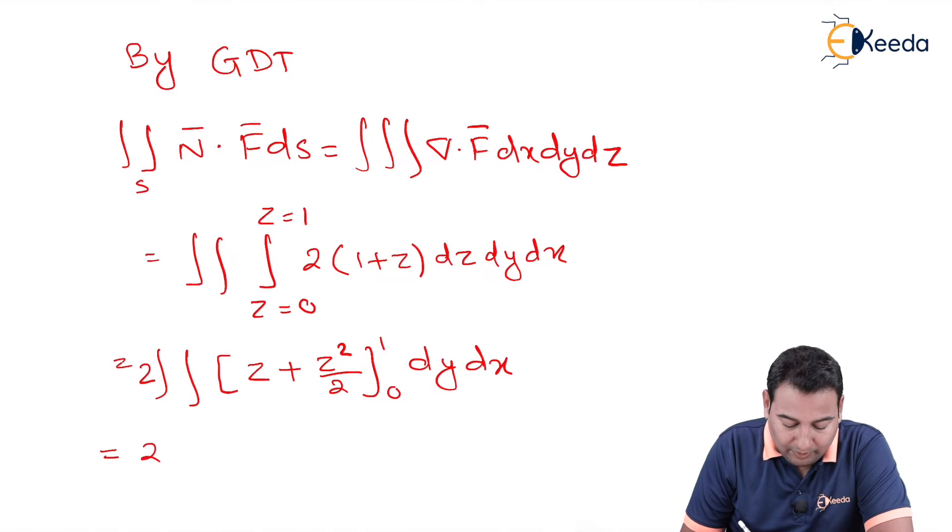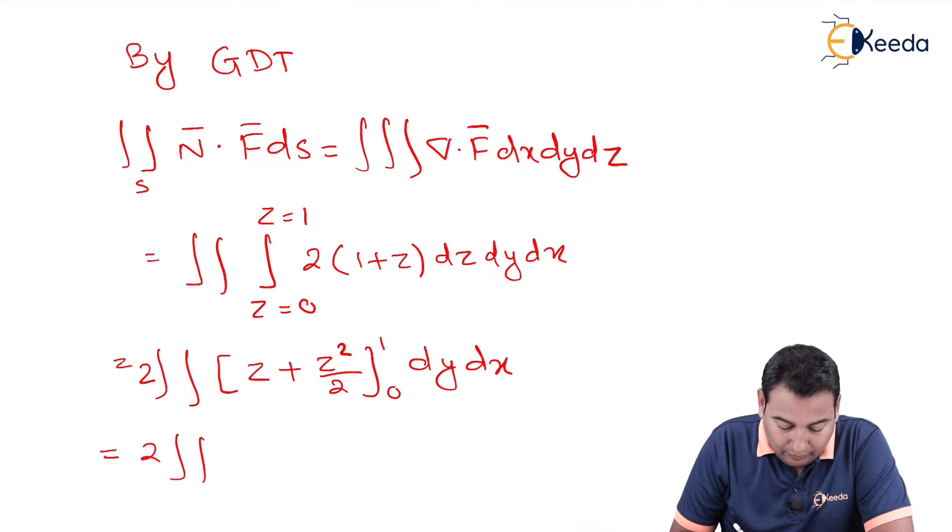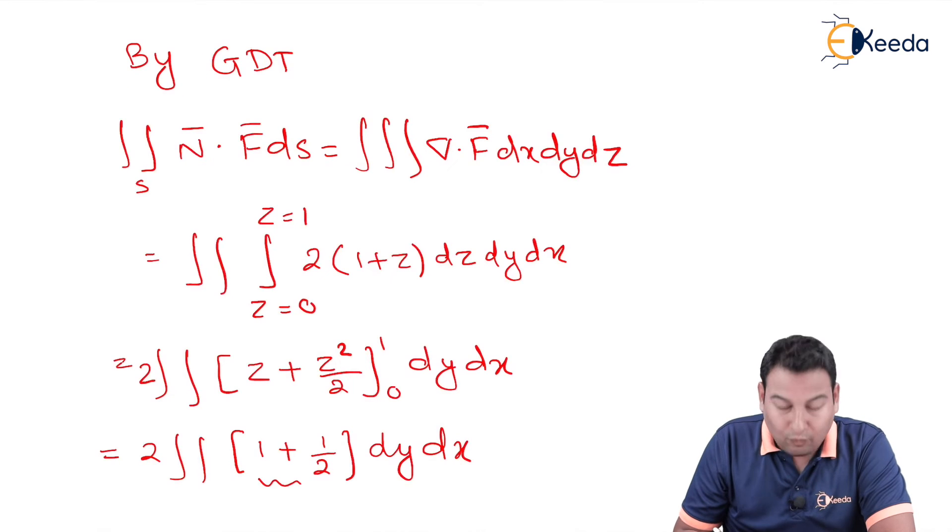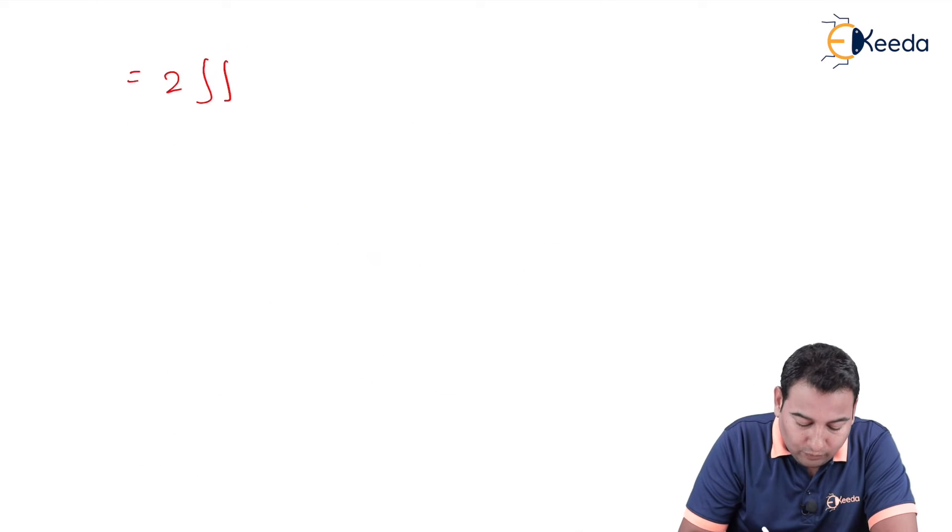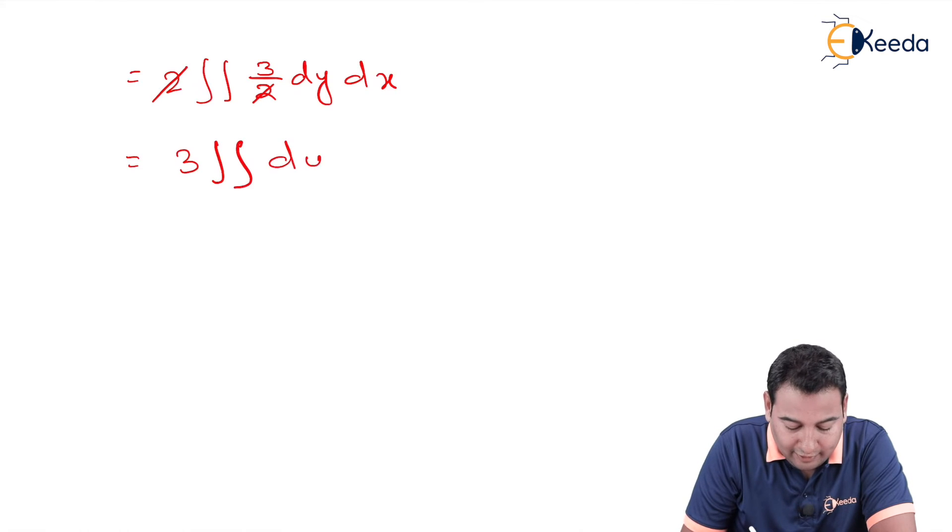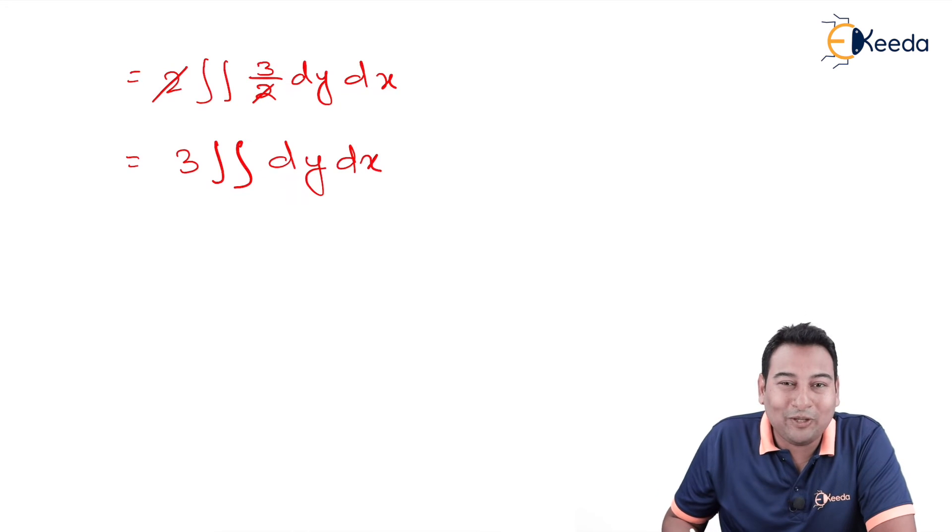Let us substitute the limits. Double integration: if you put upper limit, this is 1 plus half. For lower limit it is 0, dy and dx. Which equals 2 double integration of 1 plus half is 3 by 2, dy and dx. This 2 cancelled. 3 double integration dy dx. We evaluated with respect to z.